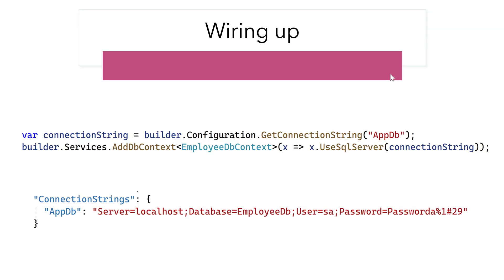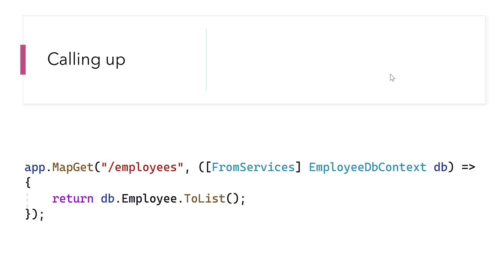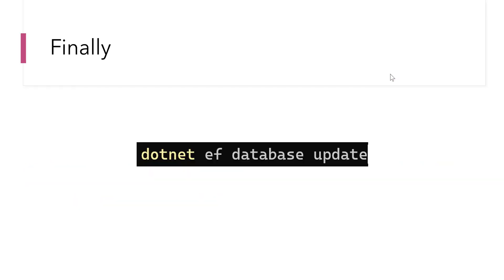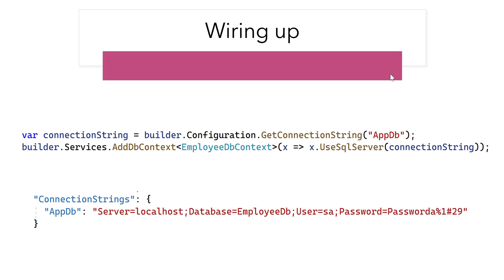We also need to wire up the settings. We need a connection string within our appsettings.json file, and then we're going to read it using builder.Configuration.GetConnectionString. We also need to do a dependency injection of the DbContext. Once that's in place, we can call up using this particular code and run dotnet ef database update to create the database on the server.